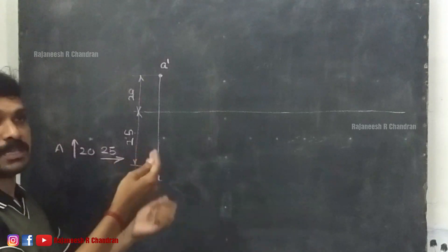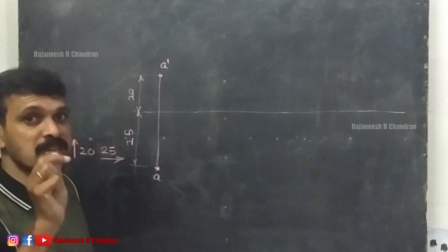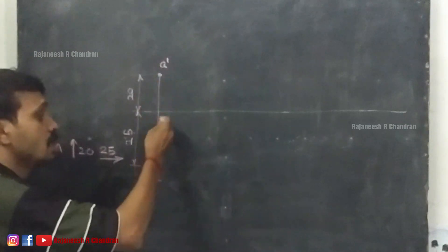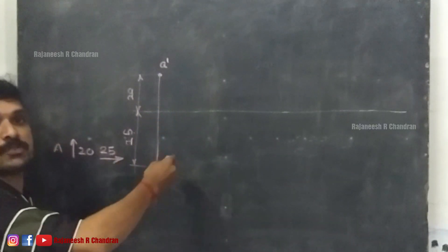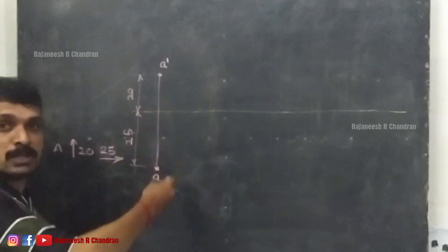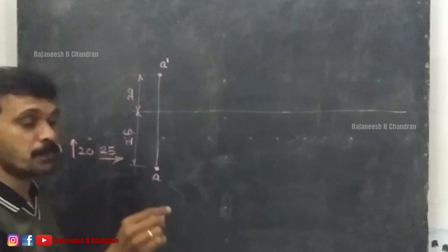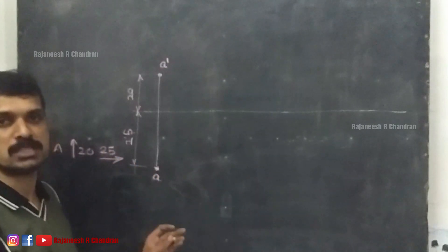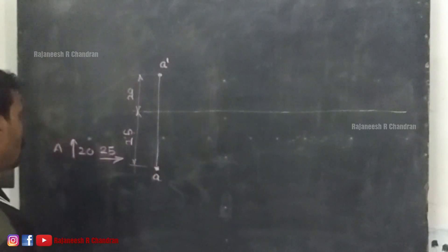To summarize: above HP means above the XY line — that is A dash. In front of VP means below the XY line — that is A, the top view.